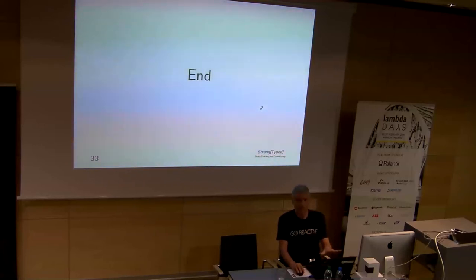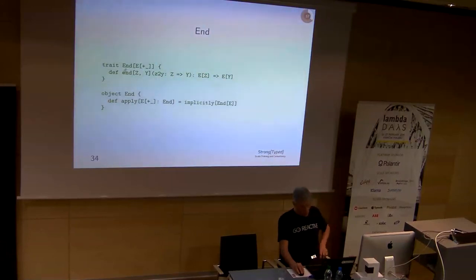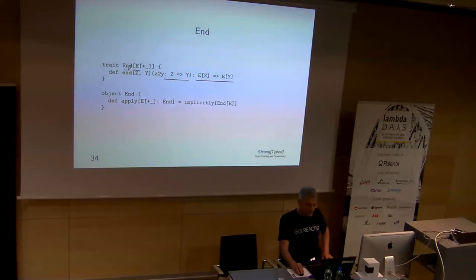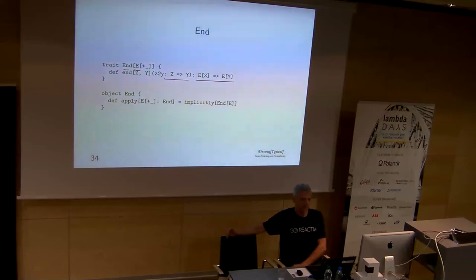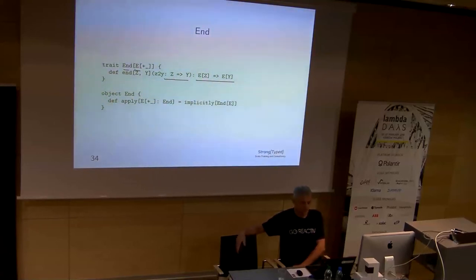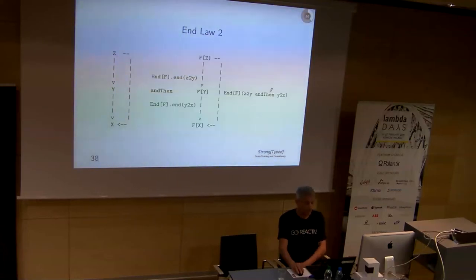Let's start with the end — not the end of the talk. I'm going to define a few type constructor classes. The first one is the map, or 'end' — think about end as map, yielding something. It lifts a Z-to-Y function to an E-Z-to-E-Y. E is of type 'end,' so my type constructor is of type end — it's a functor. These things are made implicitly available via a companion object. The laws you'd expect: identity lifted to identity, composition lifted to composition.